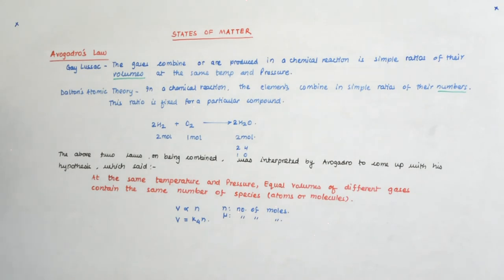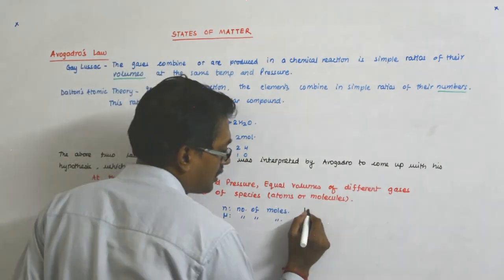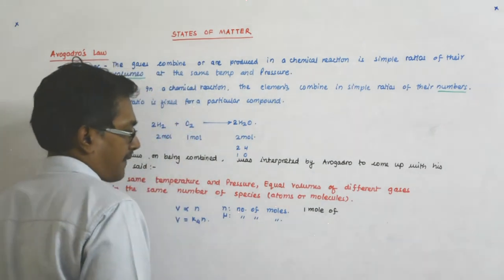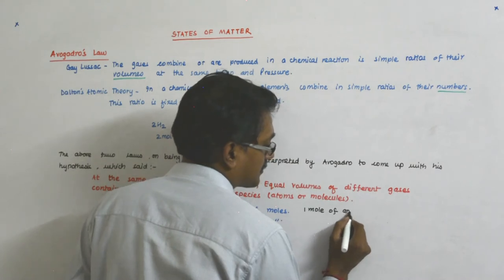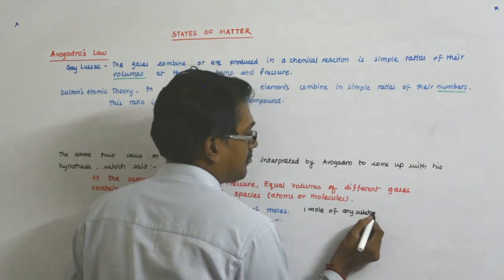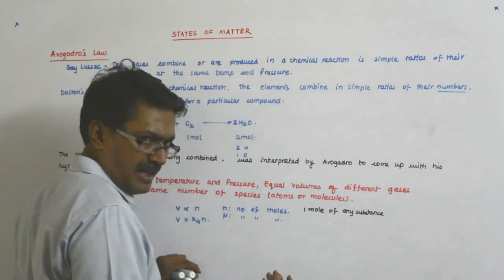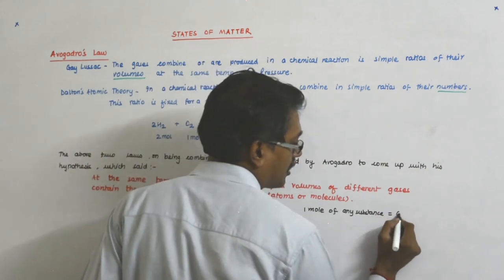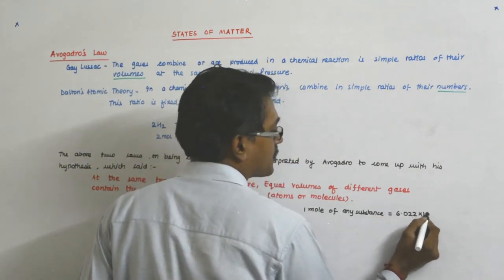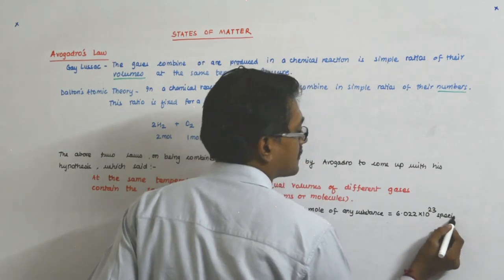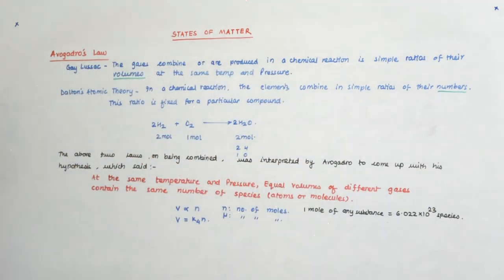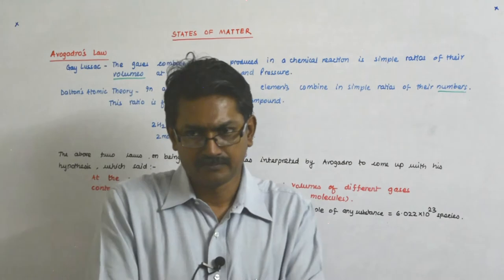Now one mole of anything, not only a gas, one mole of any substance, and that will include gas, is equal to 6.022 into 10 to the power 23 species. Again I write species because it could be the number of atoms or the number of molecules, you never know.